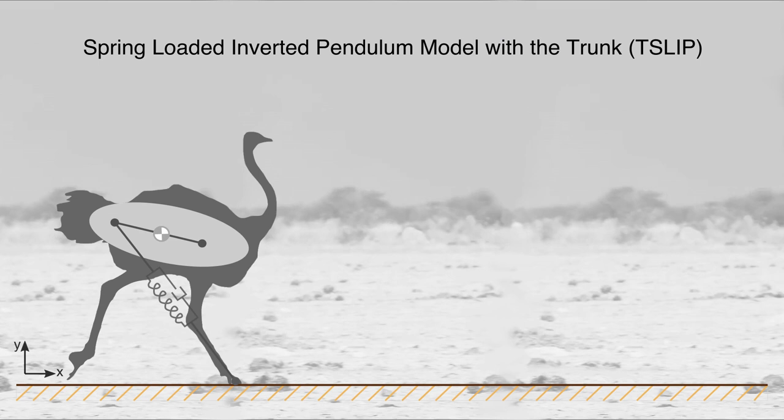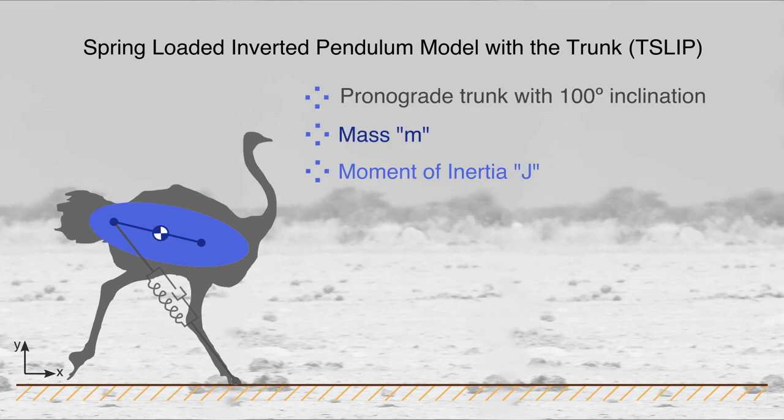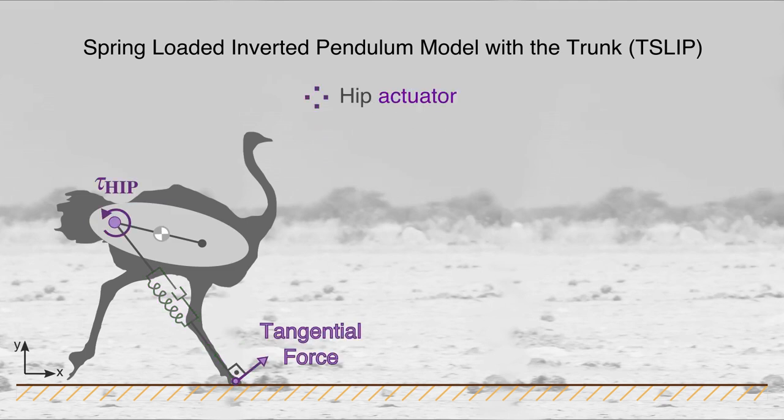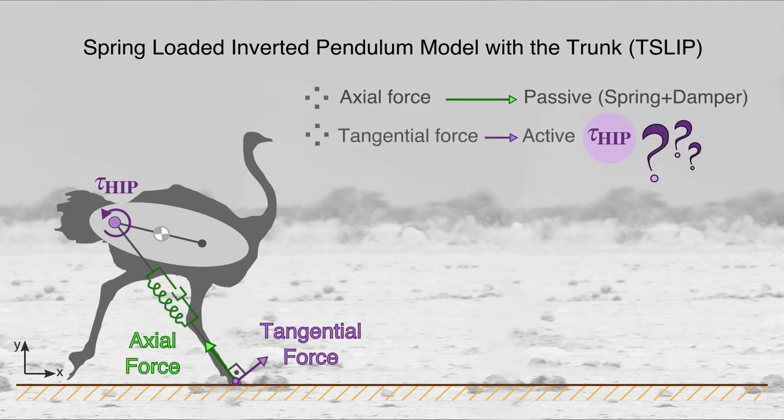In this paper, we analyze the role of trunk motions in avian running based on a spring-loaded inverted pendulum model. The model consists of a pronograde trunk with mass M and inertia J, a massless leg with a parallel spring-damper mechanism, and an actuated hip joint. The leg force determines the axial component of the ground reaction force, whereas the tangential component depends on the hip torque.